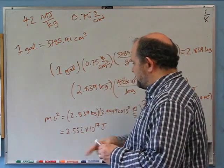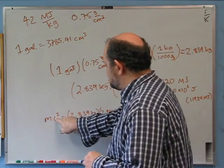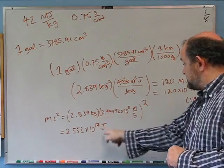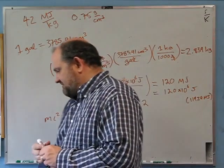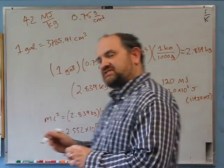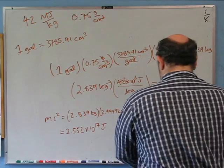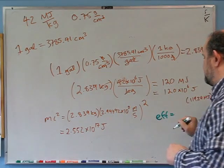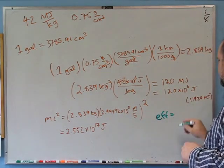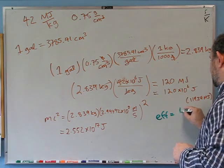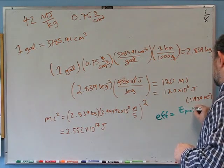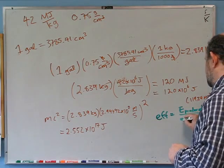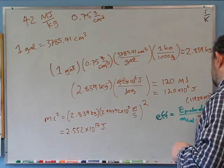That is the mass energy of a gallon of gas. You multiply by the density, figure out its mass, and mc² is that. Now: what is the fundamental physics efficiency of burning gas? Fundamental physics efficiency equals the energy produced divided by the mass of the fuel times c².